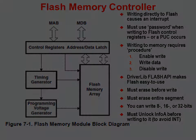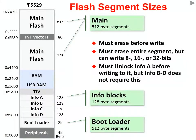This diagram shows the flash segment sizes for the F5529. Except for the info memories, which are 128 bytes long, the segment sizes are 512 bytes.